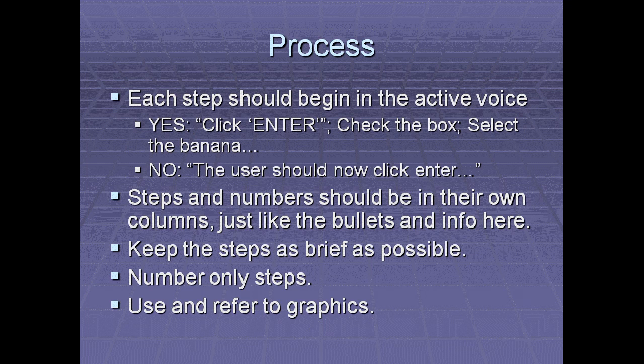Steps and numbers should be in their own column, with all text in its own column, so users can quickly and easily find information. Keep steps as brief as possible — just give them a command: do this, do that. You number only the steps, meaning only actions. You don't number resulting information, definitions, or things they might need to consider. Only number things they actually have to do. Finally, use and refer to graphics as much as possible, because it helps people understand exactly what they're supposed to be seeing when they complete a task.